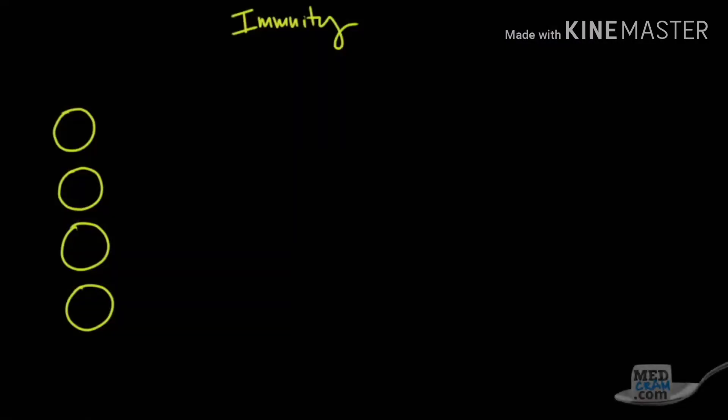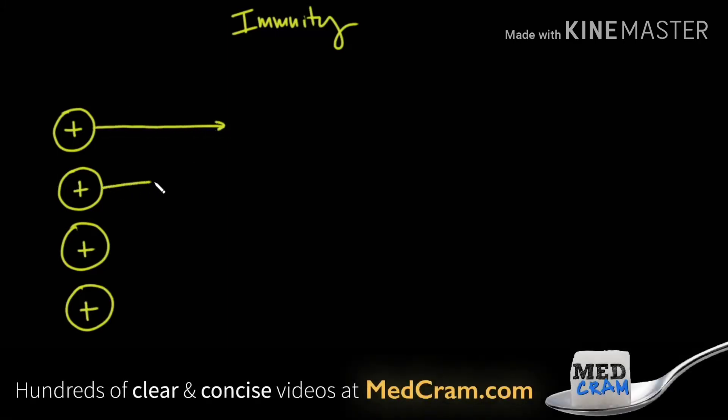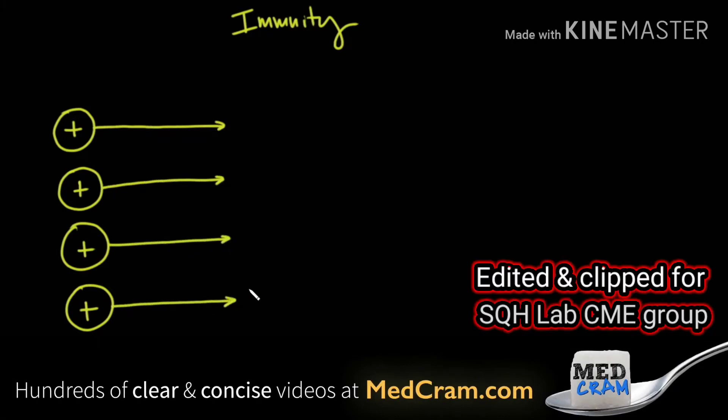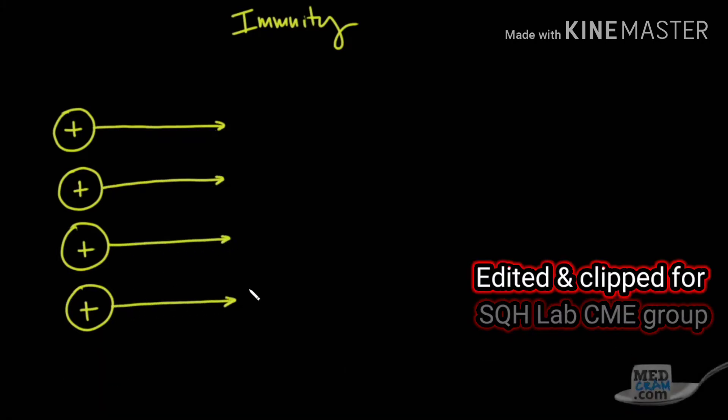They took four rhesus monkeys, and they infected all four of them with the SARS-CoV-2 virus. All of them had similar symptoms. They lost a little bit of weight, they showed signs and symptoms of the virus. Furthermore, they checked viral loads using that reverse transcriptase PCR that we talked about, and those peaked at about three days in all of the monkeys.